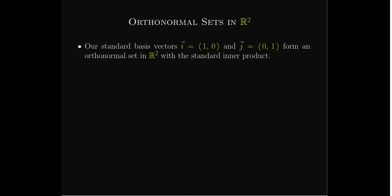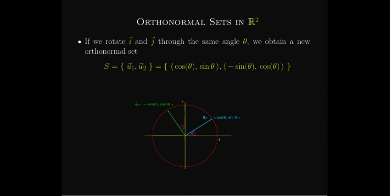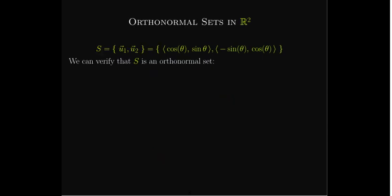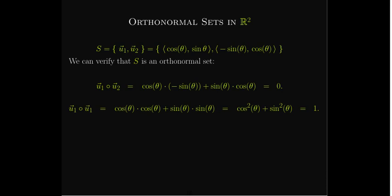The standard basis vectors in Rn form an orthonormal set. Now, if we want to get any other orthonormal set in R2, there's really only one way: you start with your i, j vectors and rotate them through an angle theta. What you'll get are two vectors — the columns of our rotation matrix — that form a new orthonormal set. The dot product of u1 with u2 gives zero because negative sine theta cosine theta plus sine theta cosine theta equals zero, and the dot product of each vector with itself uses the Pythagorean identity and equals one.